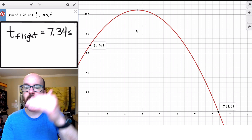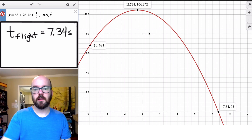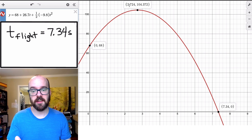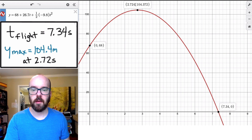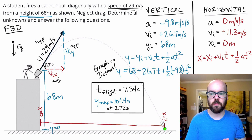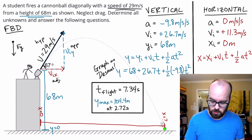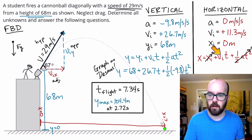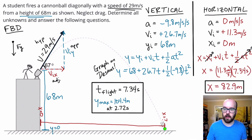The vertex of our parabola gives us the maximum height and the time it took to reach it. Clicking that point shows that after 2.724 seconds, it reached a maximum height of 104.37 meters — it won't get any higher than that. Now, substituting our flight time into the horizontal position equation — with initial position zero and acceleration zero, those terms drop out — we get x equals 11.3 times 7.34, giving a final horizontal position of 82.9 meters.